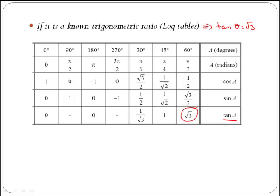If you follow the table, that brings us to 60 degrees or pi over 3 radians. Therefore, you can answer that theta in this case is pi over 3.